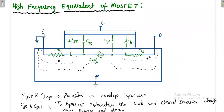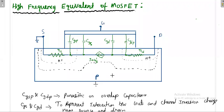The MOSFET consists of three terminals: source, gate, and drain. This is the N-channel MOSFET where the source region is made of N-type material and the drain region is also made of N-type material. This is the channel between the source and the drain, and the body or substrate of the transistor is made of P-type material.